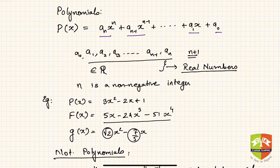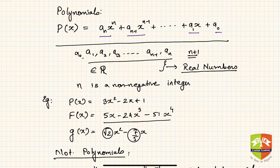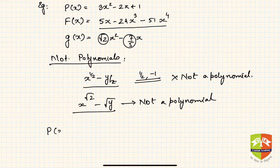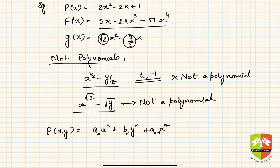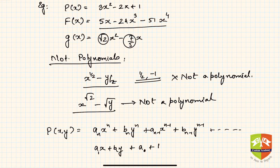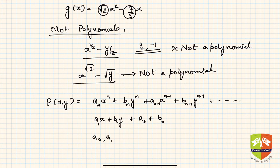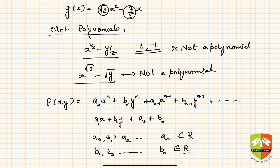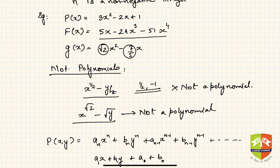Note that in the above definition we used P(x), a polynomial in one variable, but polynomials can also exist in multiple variables. A multi-variable polynomial P(x, y) could be expressed as: aₙxⁿ + bₙyⁿ + aₙ₋₁xⁿ⁻¹ + … + a₁x + b₁y + a₀ + b₀, where all aᵢ and bᵢ coefficients belong to the set of real numbers. So you can have polynomials in one or multiple variables.